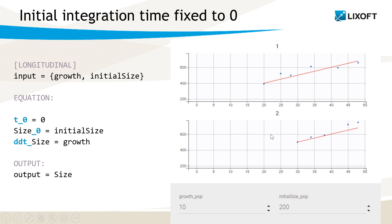In this case, the first observation is at time 20 for ID 1 and at time 30 for ID 2. But if I draw a line on this slide to extend the prediction to time 0, I can see that the initial size of 200 is the size at time 0. This is the real time at which the solution of my ODE starts.